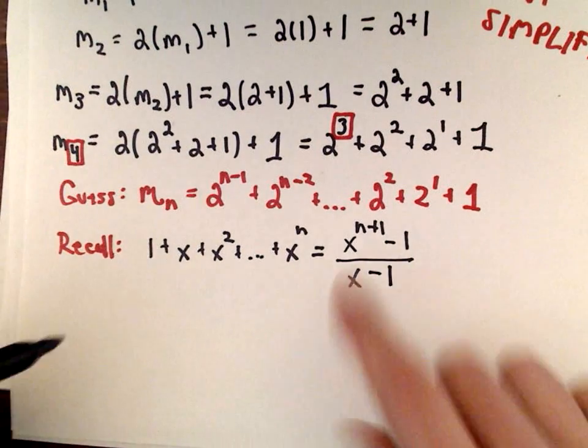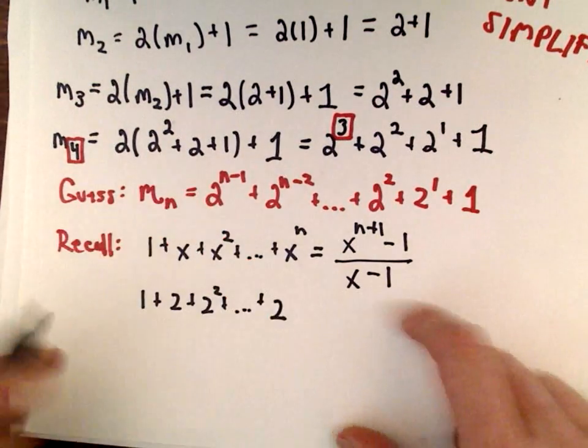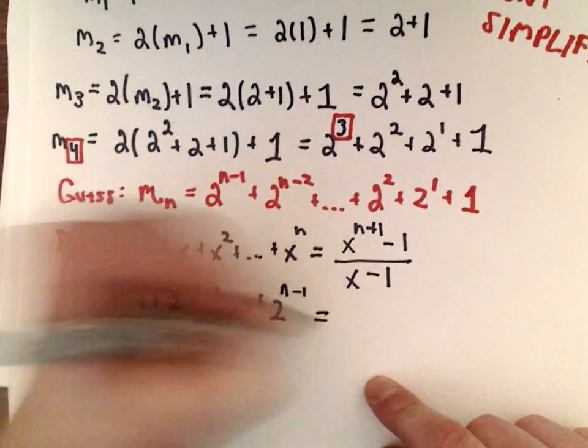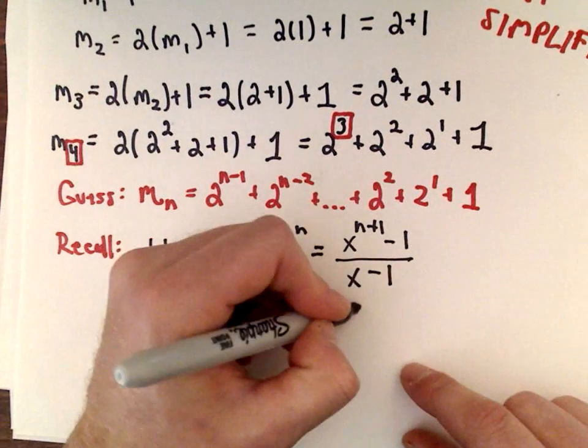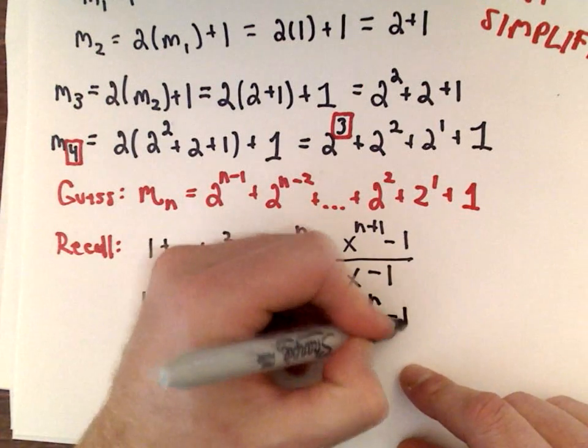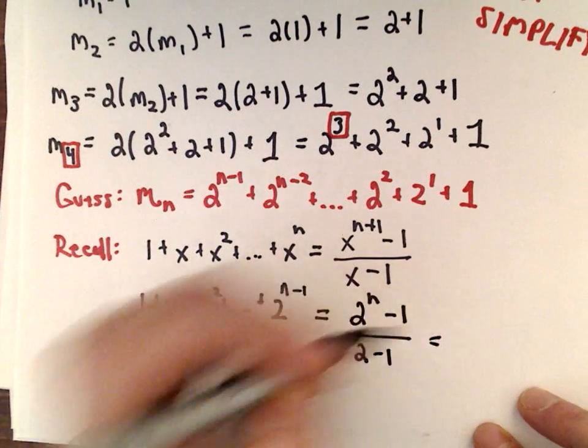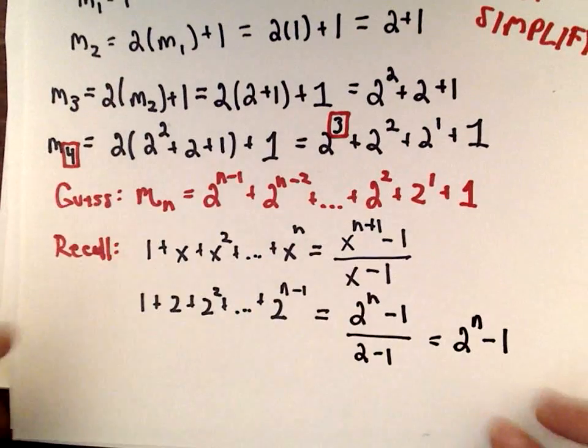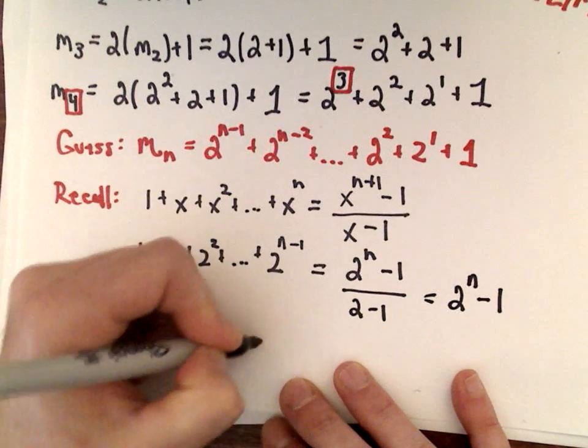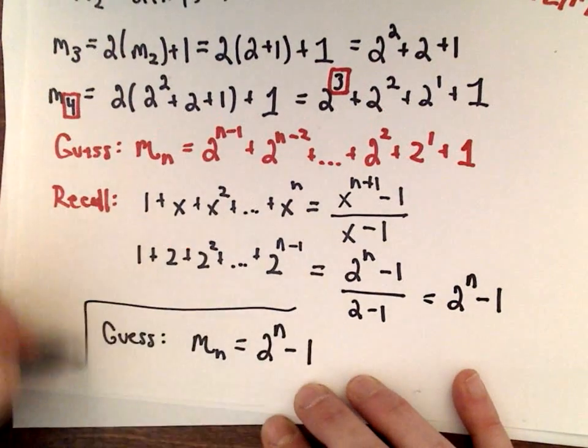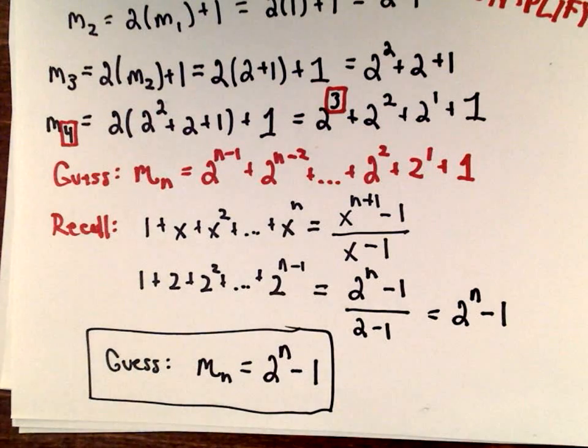I can use that now because we've got 1 plus 2 to the first plus 2 squared plus dot dot dot up to n minus 1. According to this formula, whatever the highest power is, add 1 to it. So we would have 2 raised to the power of n, subtract 1, and our x value is 2, so we have 2 minus 1. 2 to the n minus 1 over 2 minus 1 reduces to 2 to the n minus 1. My guess is that m sub n should equal 2 to the n minus 1, and it's still just a guess at this point. Proof by example doesn't cut it. We've got to come up with something better.